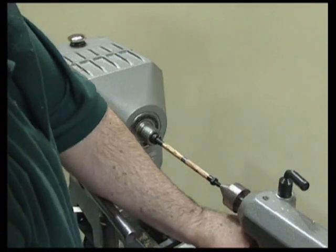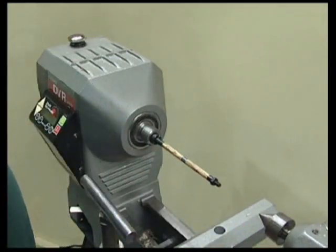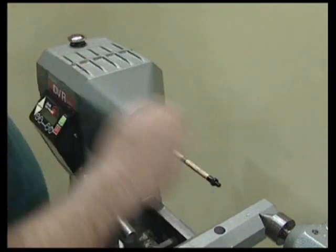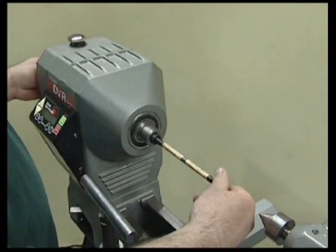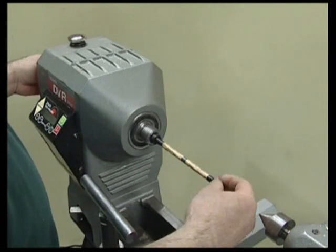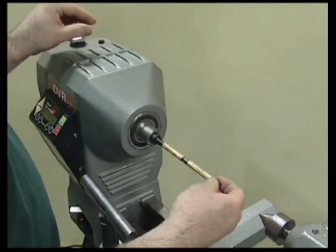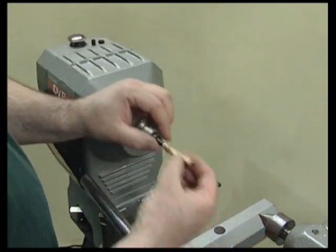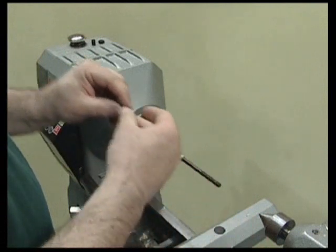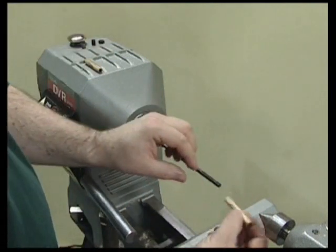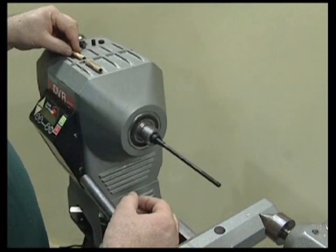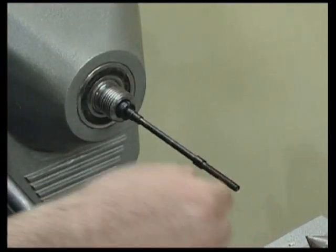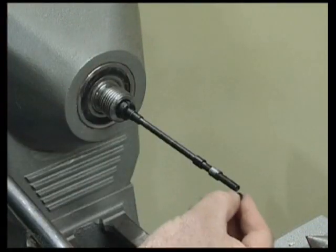Now the turning and finishing is complete. Dismount the pen blanks. Keep it in order to retain the grain pattern. Replace the bushings on the mandrel as to not lose them.